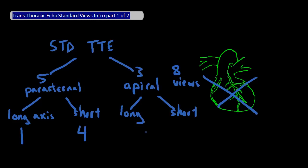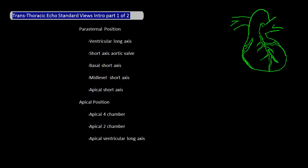And at the apical position, we have three long axis views and zero short axis views. The names of these eight views are listed here just to familiarize yourself with them. We'll talk about each of these views in more detail in our next video.